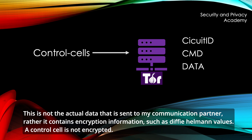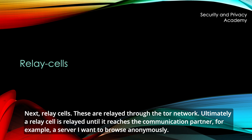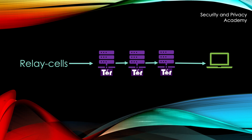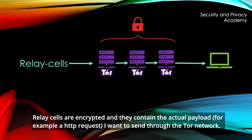A control cell is not encrypted. Next, relay cells — these are relayed through the TOR network. Ultimately, a relay cell is relayed until it reaches the communication partner, for example a server you want to browse anonymously. Relay cells are encrypted and contain the actual payload, for example an HTTP request sent through the TOR network.